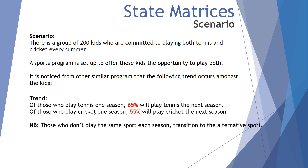Of those who play tennis in one season, 65% will play tennis the next season — that is, 65% will be retained to the sport of tennis. Of those who play cricket one season, 55% will play cricket the next season. Those who don't play the same sport each season transition to the alternative sport. So the remaining 35% transition from tennis to cricket, and the remaining 45% transition from cricket into tennis.